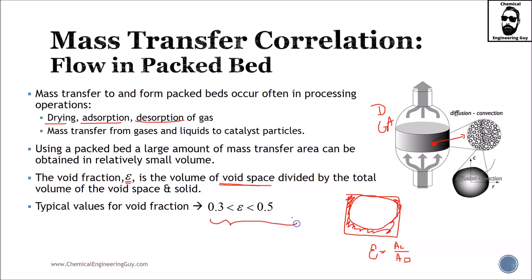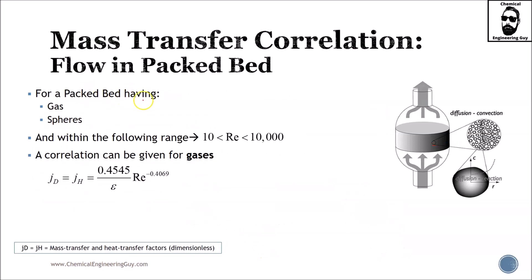Typical values go from 0.3 all the way to 0.5, even though technically speaking there is no formal limit. The range is from 0 to 1: 0 means there is no void space, and 1 means by definition it is empty. For a packed bed with gas and spheres, this is very important.